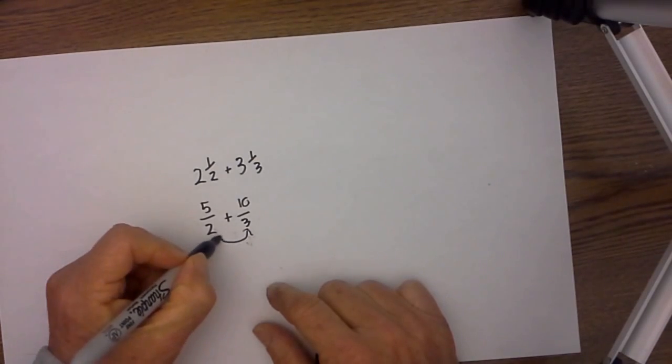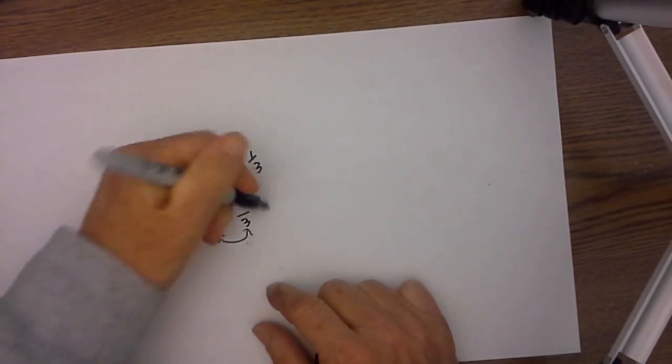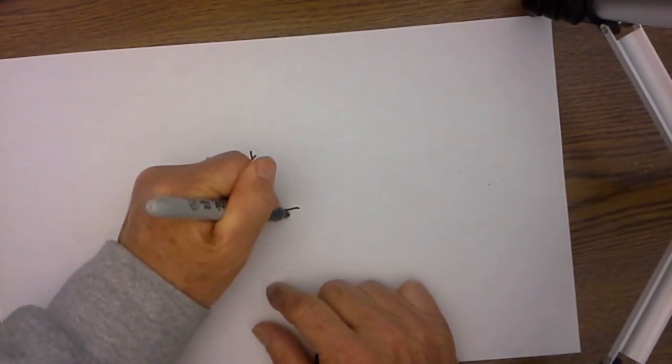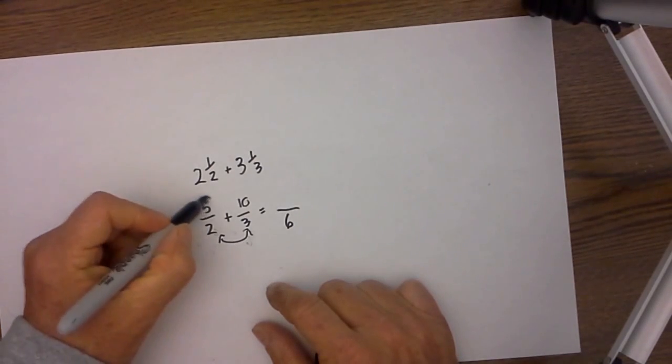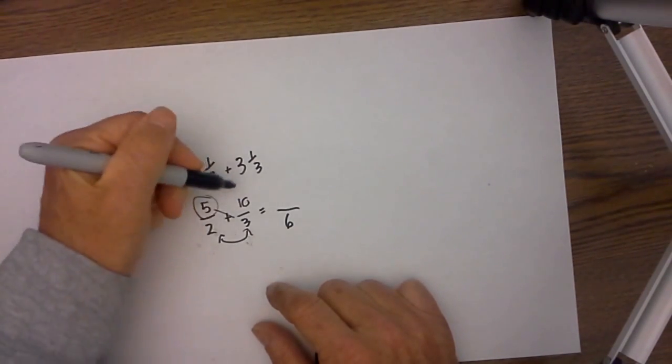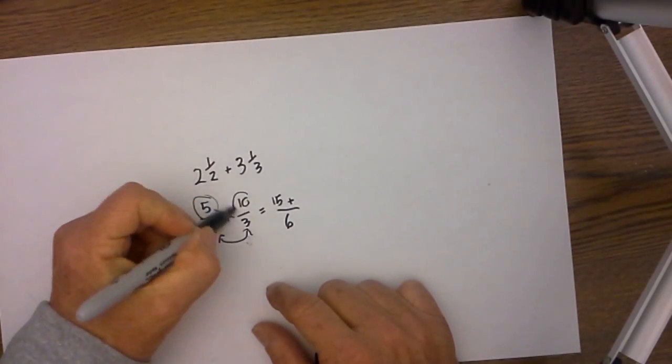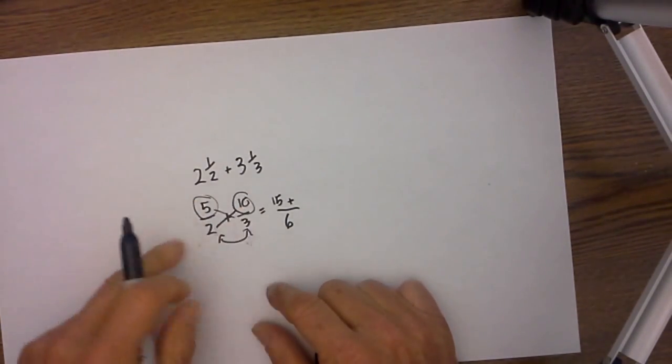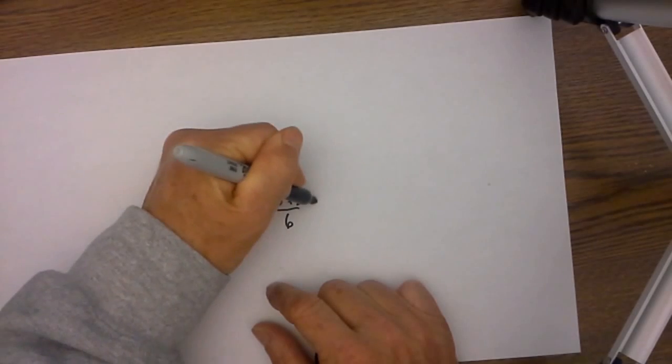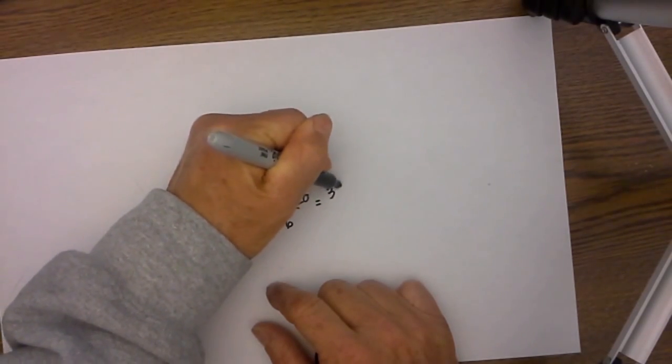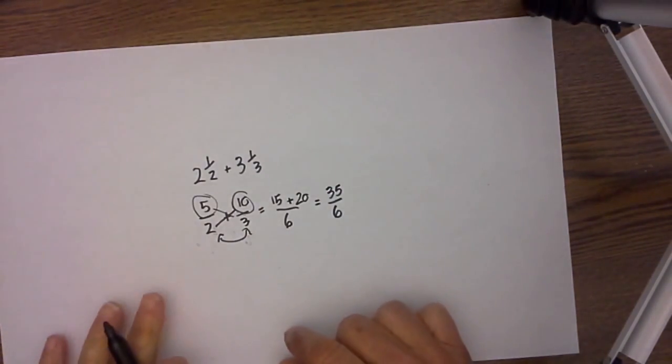Then apply the smiley face. 2 times 3 equals 6. Remember always start at the left. Go across and that is 15. Cross multiply again and that is 20. So this becomes 35 over 6, the improper fraction.